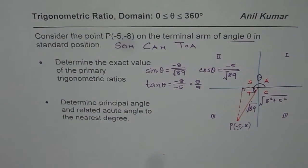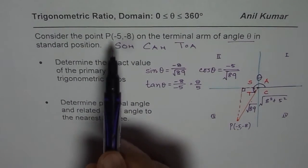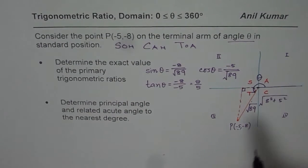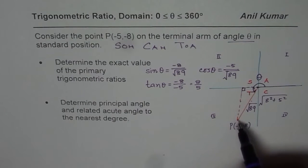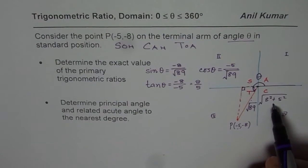The steps involved are: whenever you are given a point, the point gives you x and y coordinates, and you have to find the hypotenuse using the Pythagorean theorem.